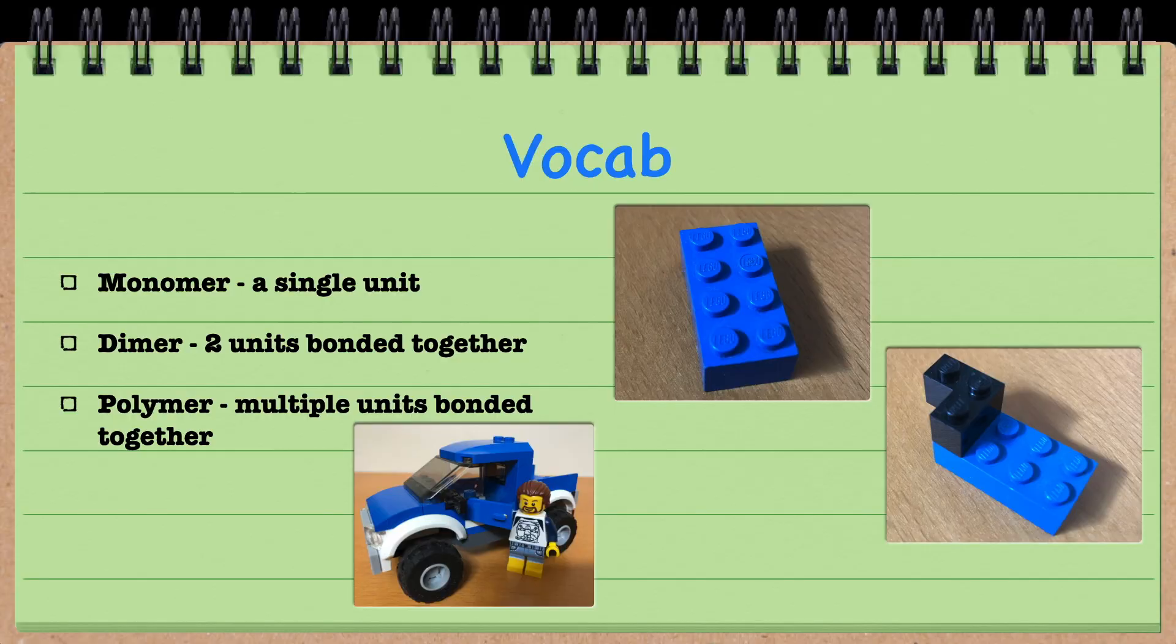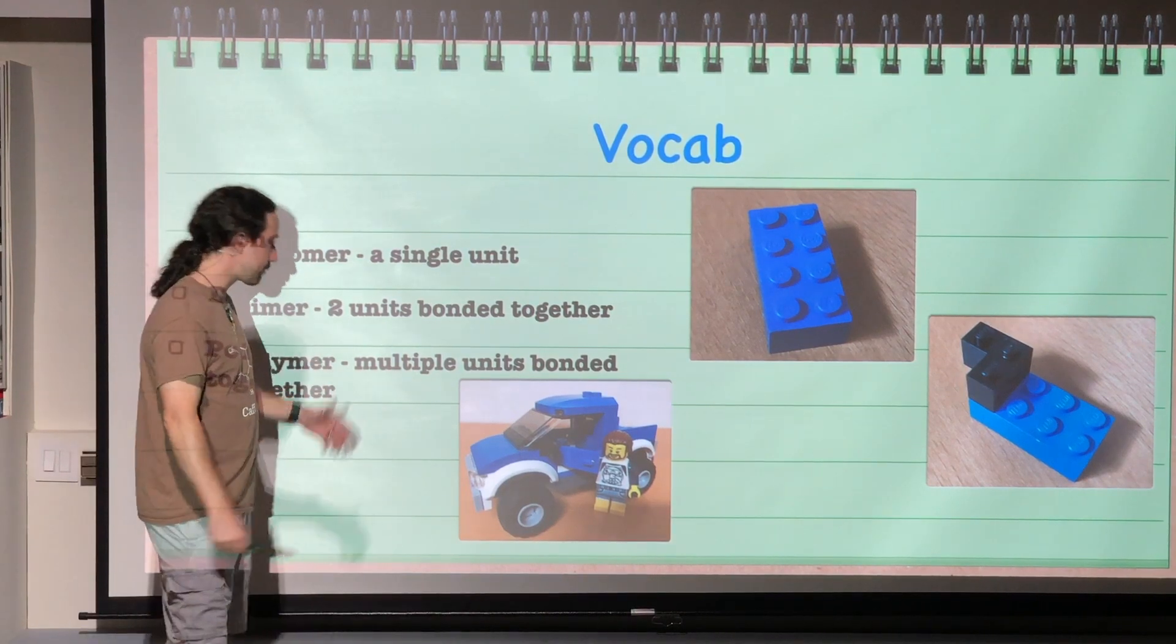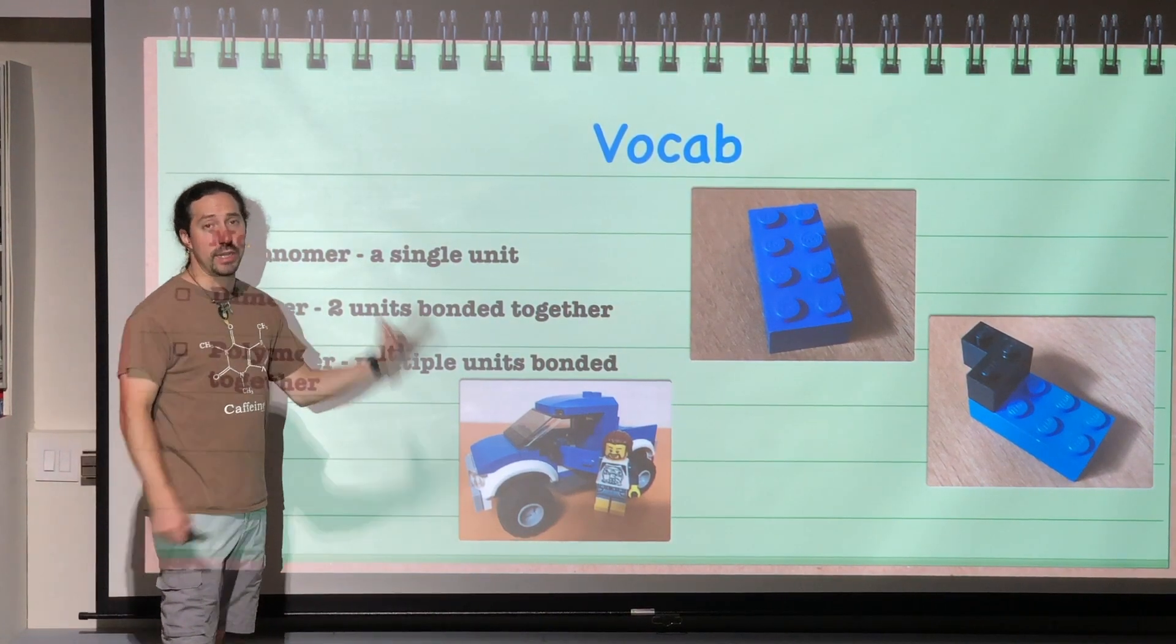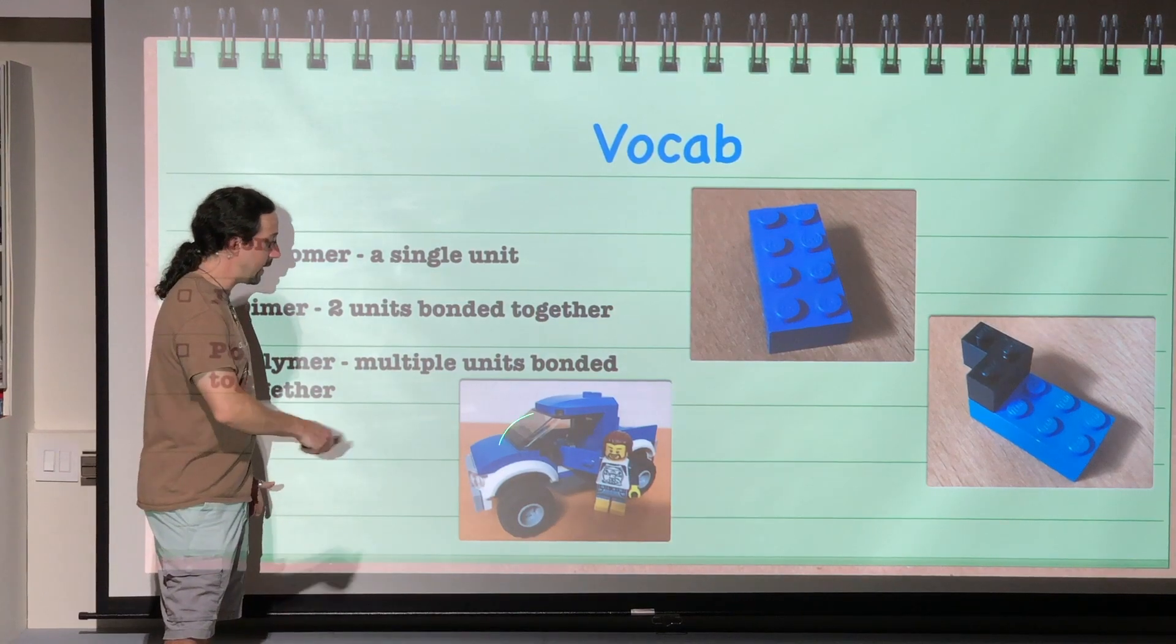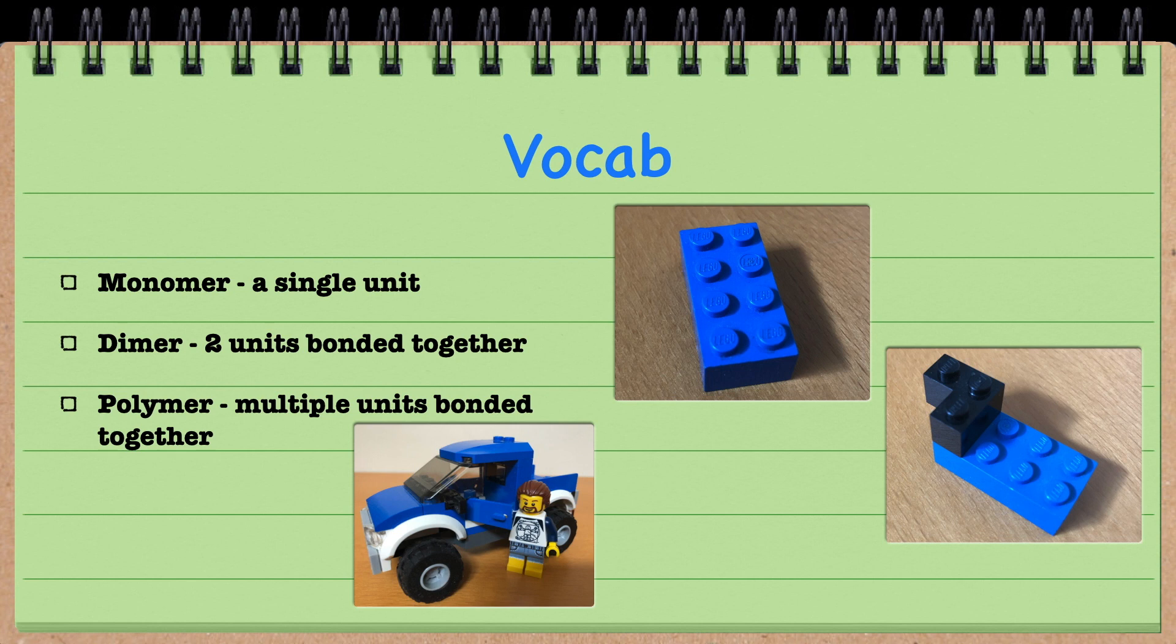And lastly, we get to a polymer. That's multiple units bonded together. Poly meaning many. So this is many units that are then bonded together and they can form a very complex structure at the end. Whatever that structure would be, that is what they are going to form.